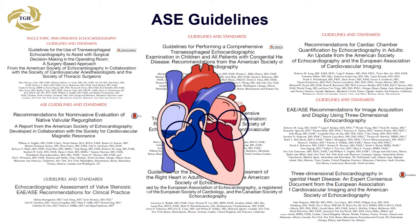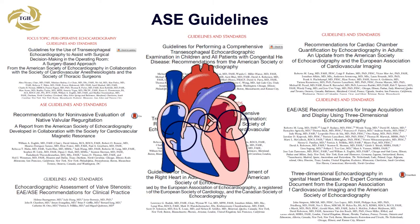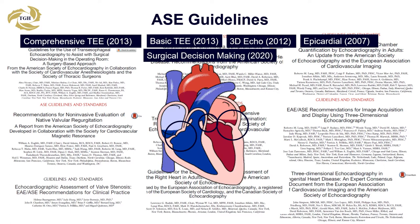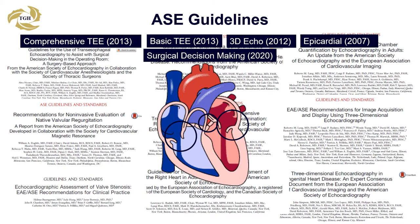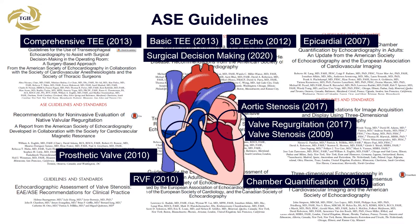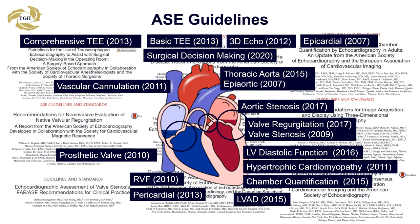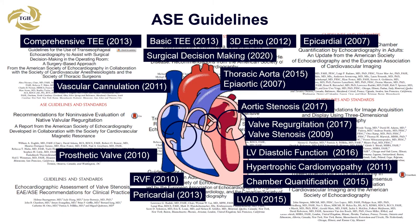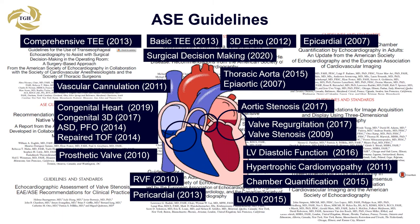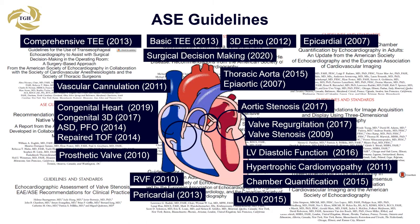There are approximately 20 guidelines of relevance to TEE and perioperative practice. Some key guidelines relate to imaging, of which the most significant are the comprehensive TEE, basic TEE, 3D echo, epicardial, and the recent one on surgical decision making. There are also guidelines covering valves, ventricular size and function, different pathologies and procedures, and a few devoted to congenital heart disease. All guidelines are worthy reads for those studying for exams.